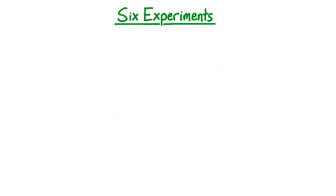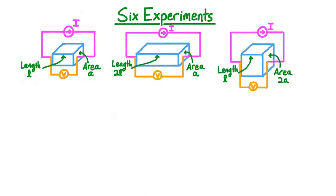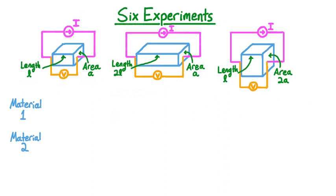We can actually determine all of the relevant factors with six very similar experiments. Our measurement setup will be almost identical to what we had before, but with the role of current and voltage reversed. This time, we will pass a fixed current I through a block of material and measure the resulting potential drop across the block, V. The length of our block, measured parallel to the direction of current, will be lowercase l, and the cross-sectional area of the block, measured perpendicular to the direction of current, will be lowercase a. We'll also consider two almost identical setups where the block has different dimensions — one where the block has twice the length but the same cross-sectional area, and one where the block has the same length but twice the cross-sectional area. Finally, to make a total of six experiments, we'll perform each of these measurements on two different materials, which we've called Material 1 and Material 2.